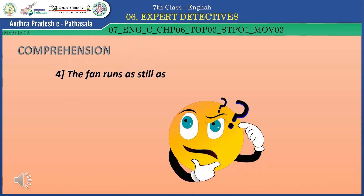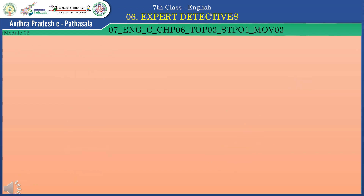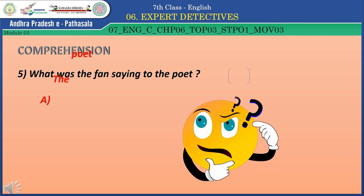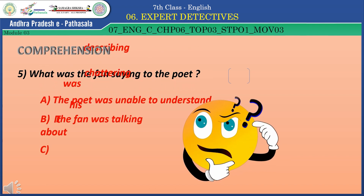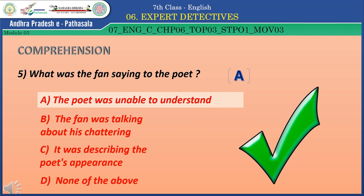Question 4: The fan runs as still as — Option A: Twine. Option B: Wind. Option C: Water. Option D: Horse. The correct answer is Option C — Water. Question 5: What was the fan saying to the poet? Option A: The poet was unable to understand. Option B: The fan was talking about his chattering. Option C: It was describing the poet's appearance. Option D: None of the above. The correct answer is Option A — the poet was unable to understand.